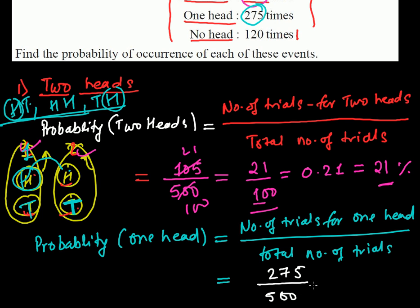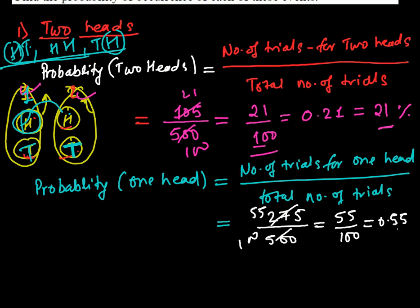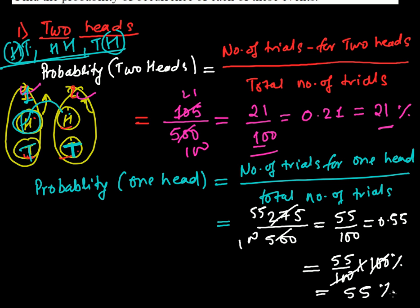That gives us 275 divided by 500. Simplifying — divide both by 5: 55 divided by 100. So the probability of getting at least one head is 0.55, or 55%.